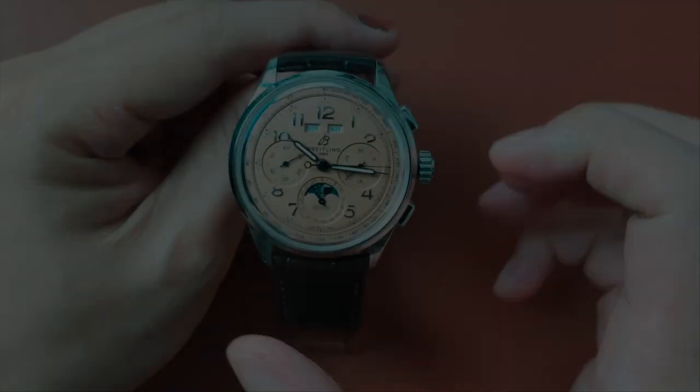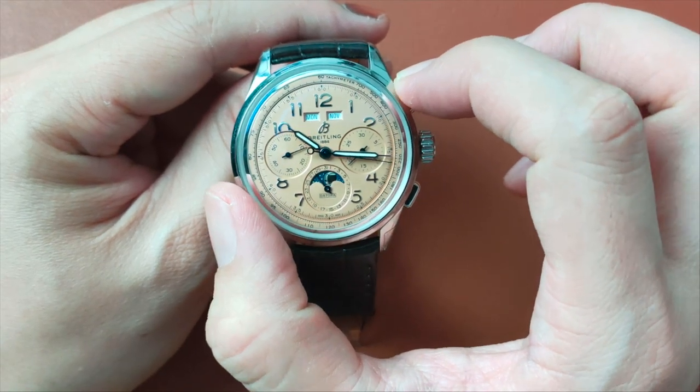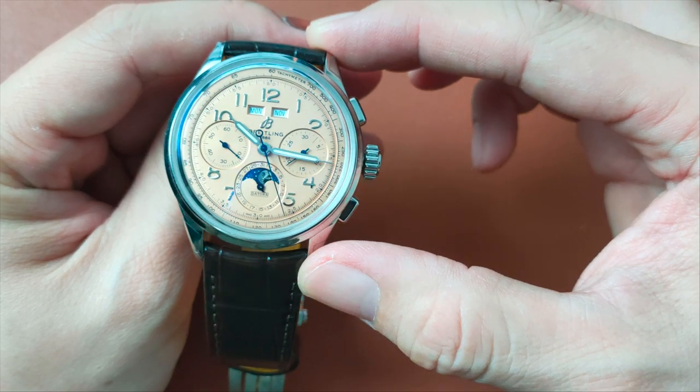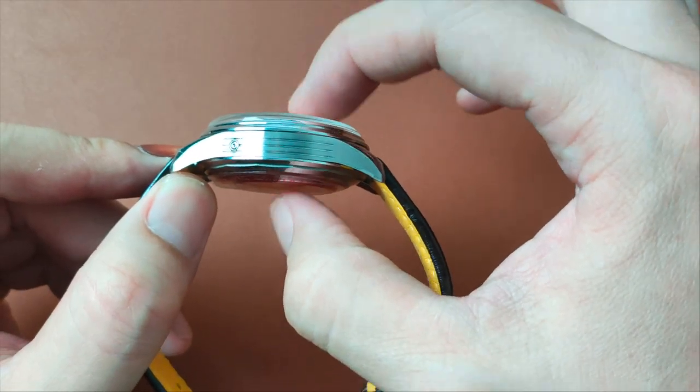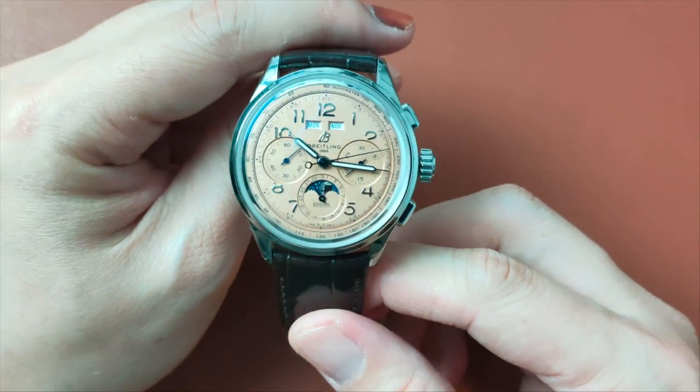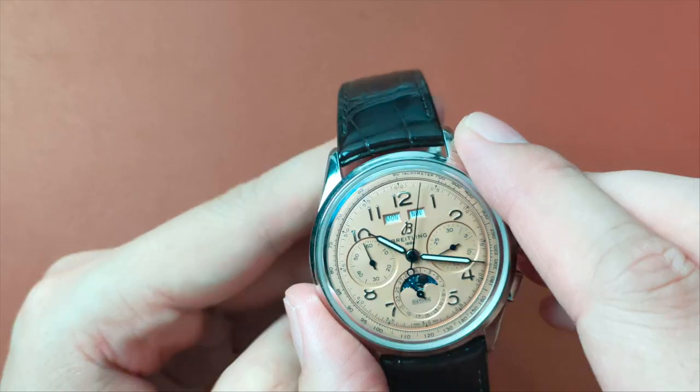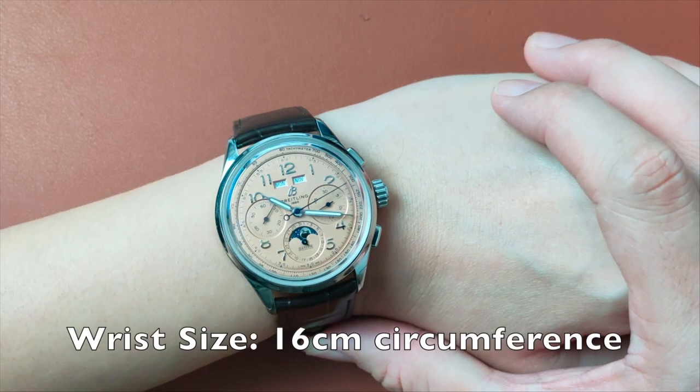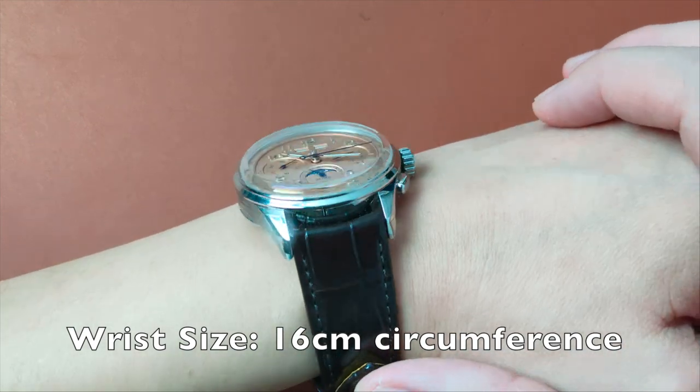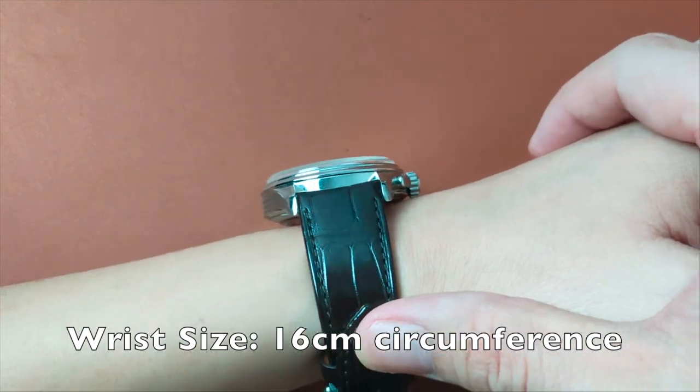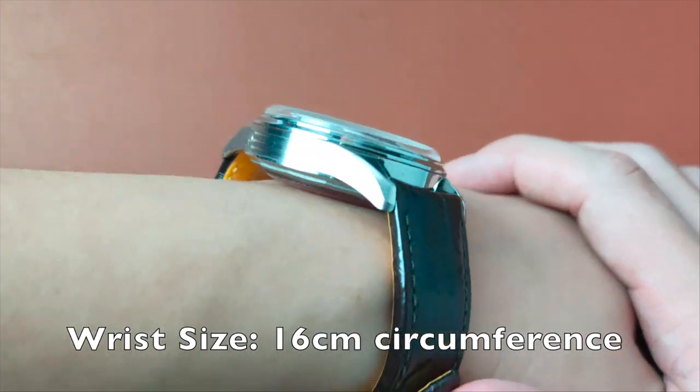The watch is measured at 42mm in diameter, 50mm from lug to lug, and 15.3mm in thickness. Don't let those numbers fool you. Whilst on paper, this feels like a chunky watch. On the wrist, it doesn't feel that way. And that's because of the proportions and some intelligent design it has.